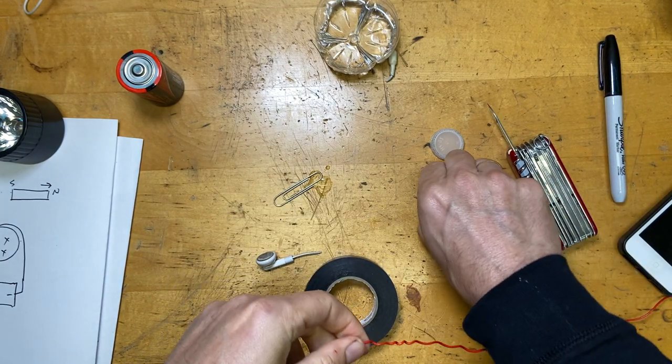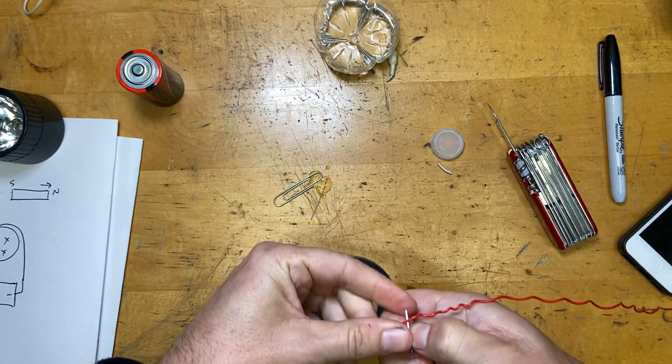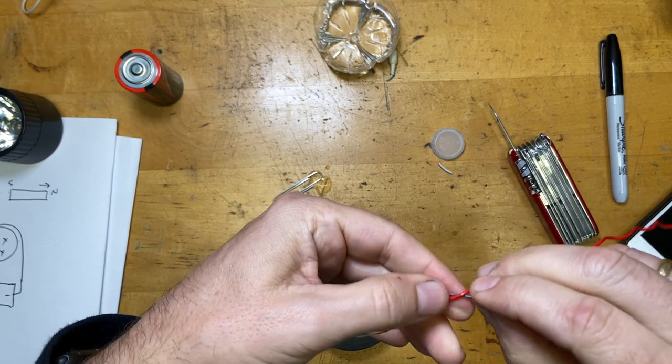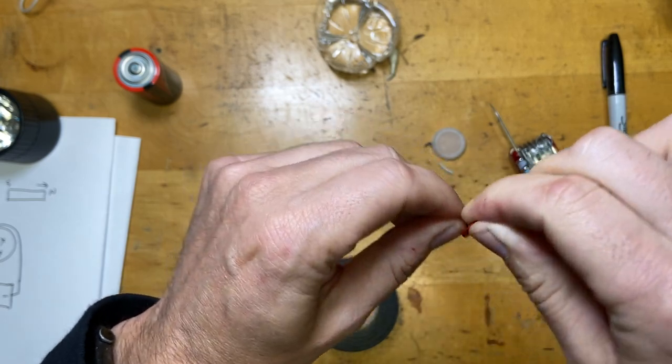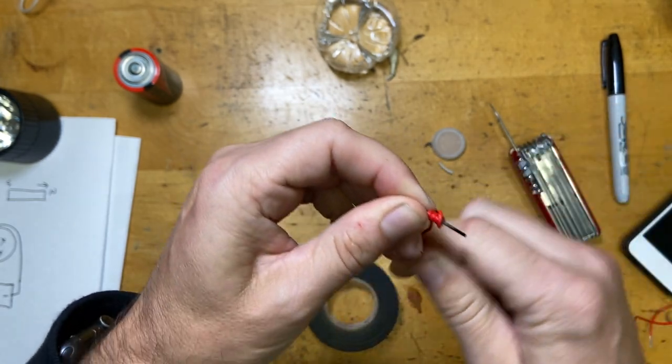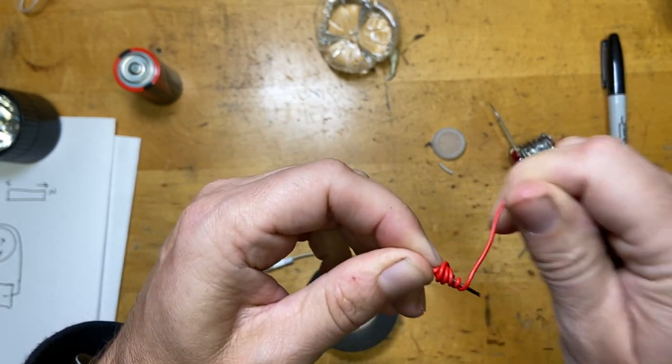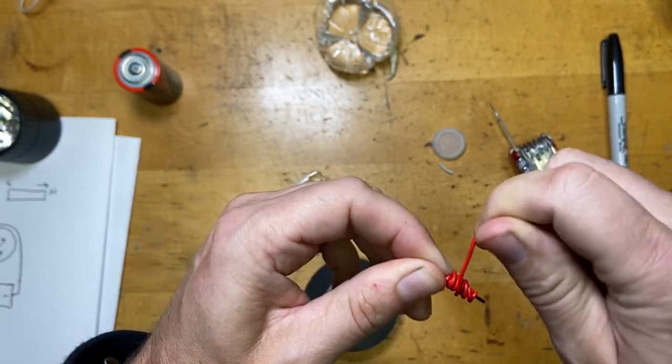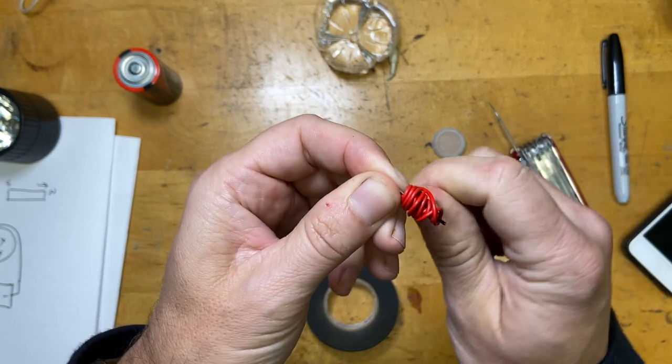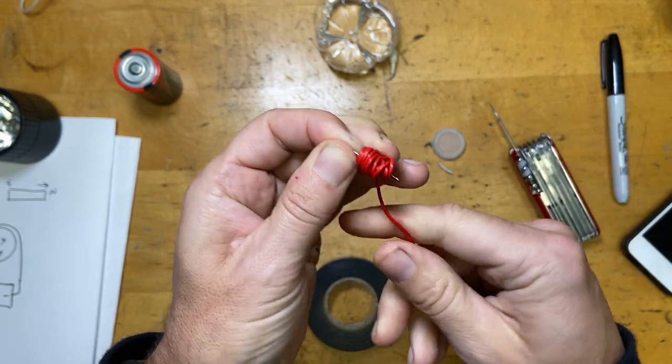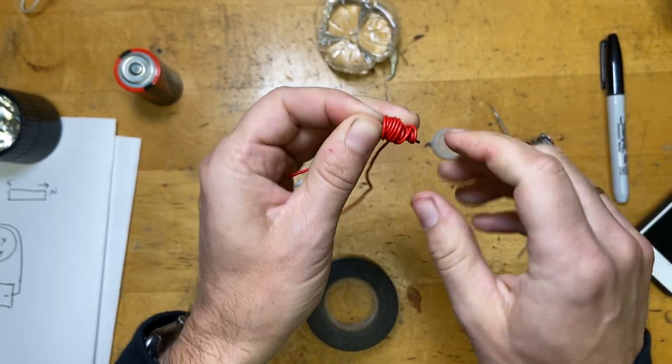So I'm going to take this and wrap it around my... I want to leave a piece over here so I can connect it to a battery. Now I'm going to wrap it this way. More loops equals better loops. I also like this wire because it's stiff and it holds its shape.